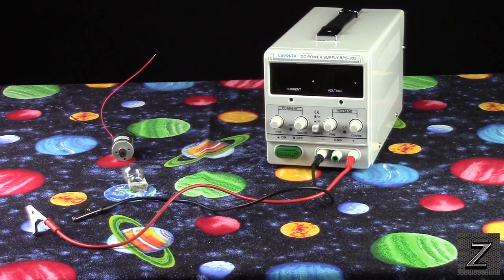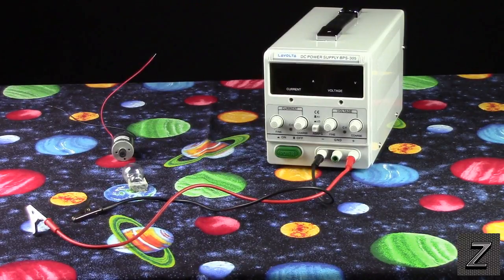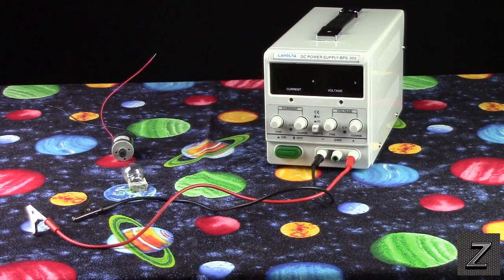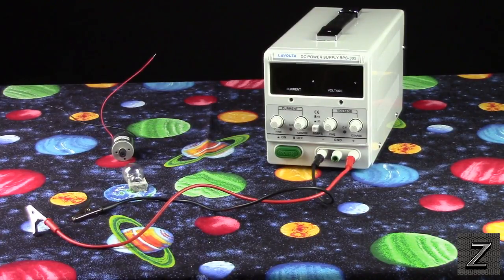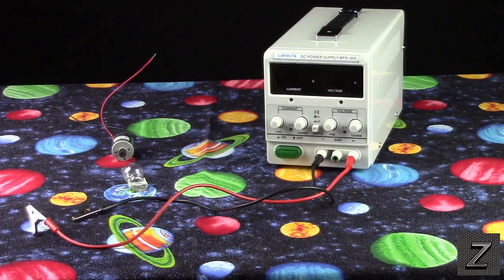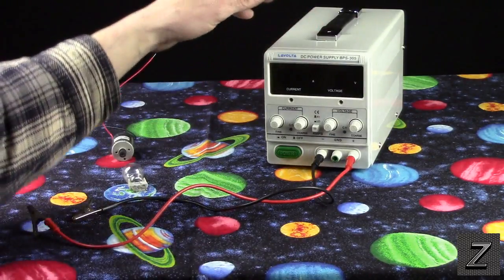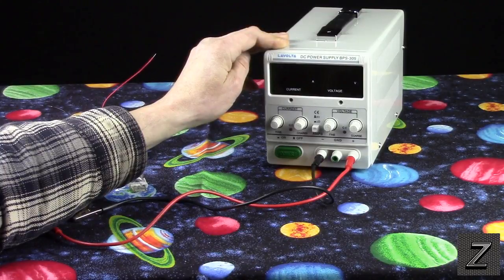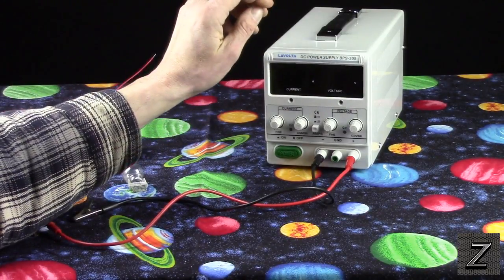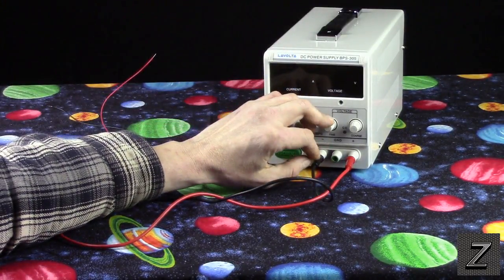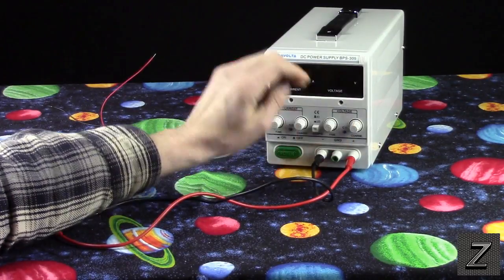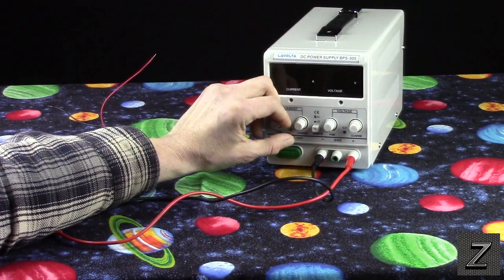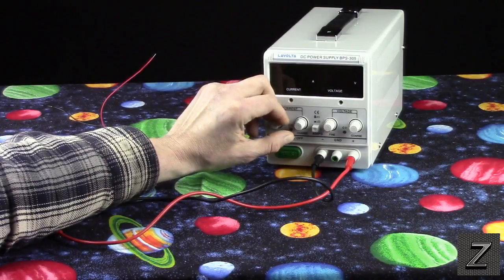Hello and welcome to the Z-Hut. Today we're going to take a look at the LaVolta DC Power Supply model number BPS-305. Now this is a 0 to 30 volt variable power supply that you can control both the voltage between 0 and 30 volts and you can control the current from 0 to 5 amps.